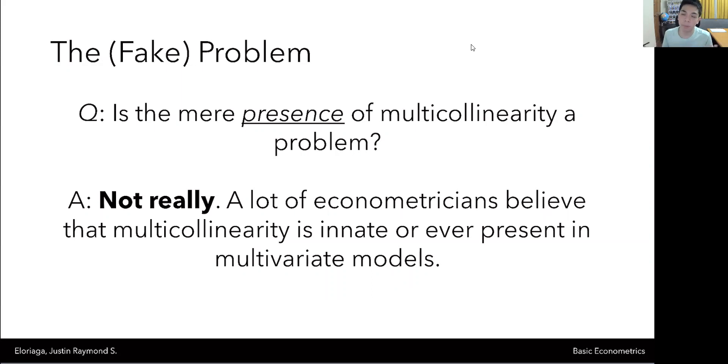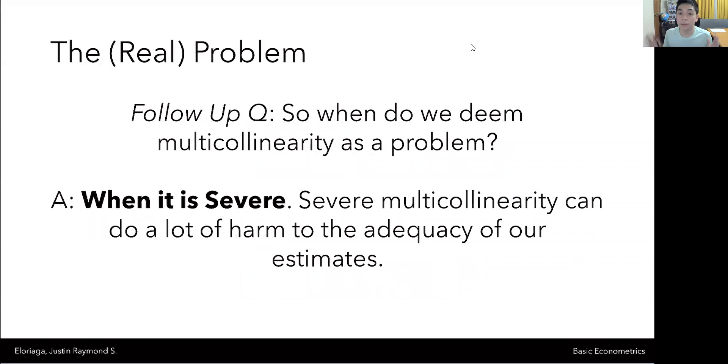So if the presence of it is not a problem, then how does it become a problem? Why are we even discussing it? Well, the real problem, when do we deem multicollinearity a problem, is if the degree of multicollinearity is quite severe. That's when it becomes a big issue. And severe multicollinearity can do a lot of harm to the adequacy of your estimates. Now, I'll preface it by saying that the estimator that you get still remains unbiased and fairly consistent, but it is no longer efficient and there are a couple of other things that may affect it, which we will discuss in a succeeding video.